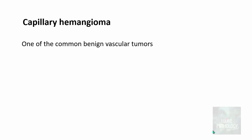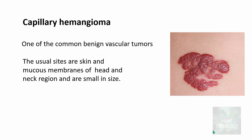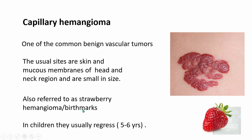Capillary hemangioma is one of the most common benign vascular tumors. The usual sites are skin and mucous membranes of the head and neck region. They are usually smaller in size, ranging from a few millimeters to a few centimeters. They look like a strawberry, which is why they are also referred to as strawberry hemangioma or strawberry birthmarks. These birthmarks usually regress — in children they regress by the seventh year of life. They are raised reddish lesions seen on the skin.